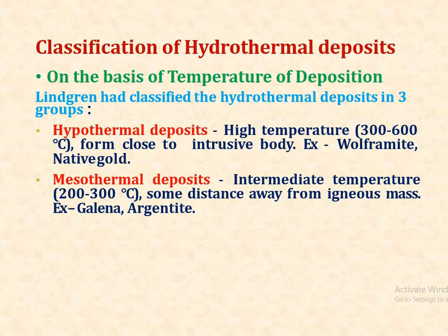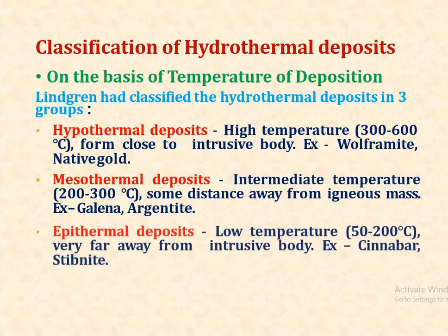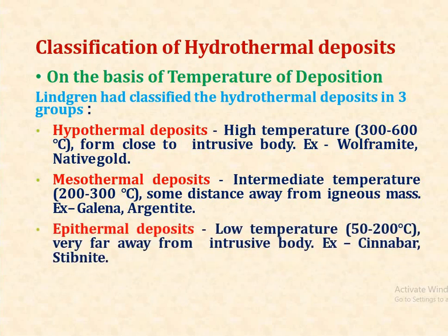The third one is epithermal deposits. These are low temperature deposits having a temperature range from 50 to 200 degrees Celsius. They form very far away from the intrusive body. Examples of deposits include cinnabar and stibnite.